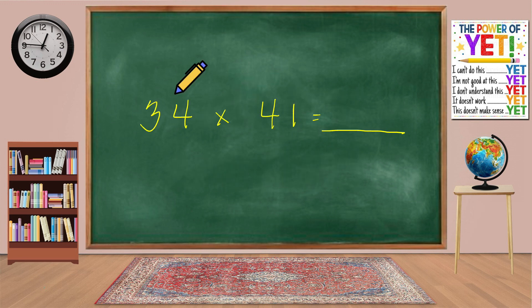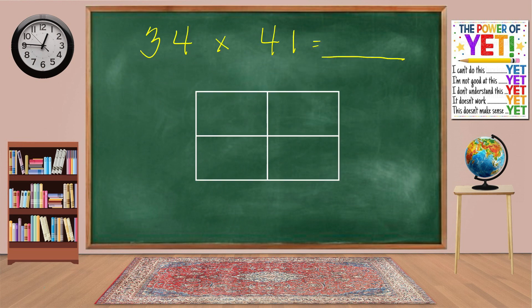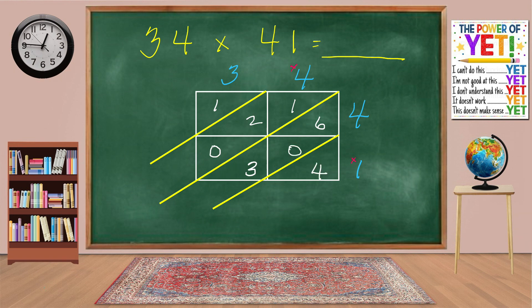How about 34 times 41 equals what? Set up our lattice. Draw our diagonals. Plug in our numbers. Multiply the top number on the right with the numbers above. 3 times 4 equals 12. 4 times 4 equals 16. Now, multiply the bottom number on the right with the same numbers on top. 3 times 1 equals 3. Remember, that's 0 tens and 3 ones. 4 times 1 equals 4.